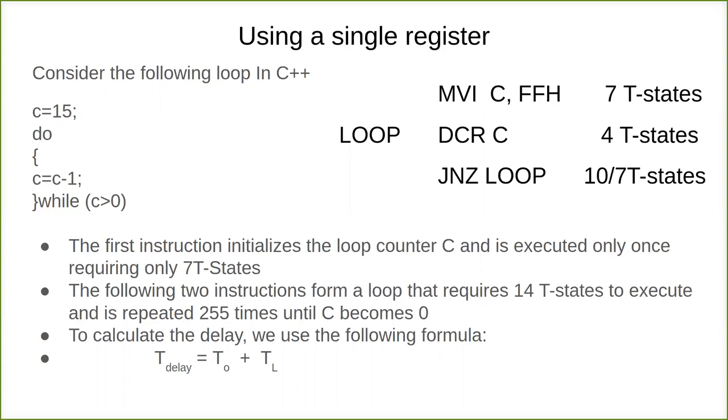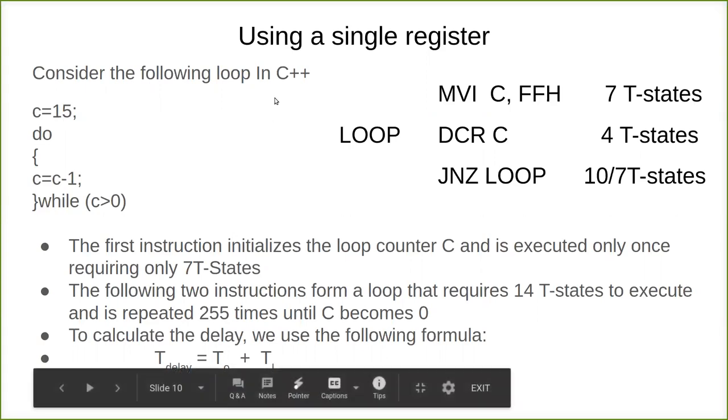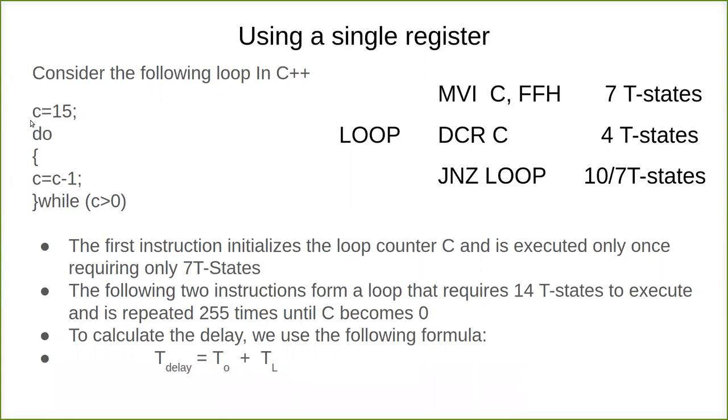Let us consider a loop in C++. For example, C equals 15, a variable is assigned. Within the do loop, we have while C is greater than zero. Inside the loop we decrement the counter. Initially C is 15, then C minus 1, so now it is 14.